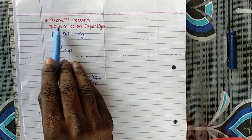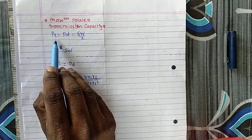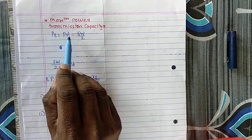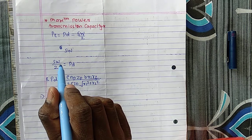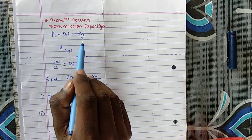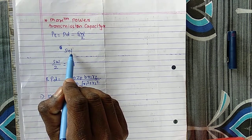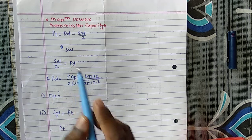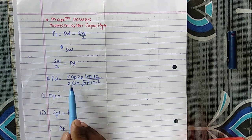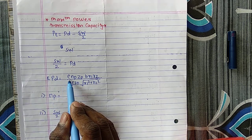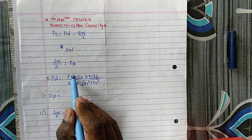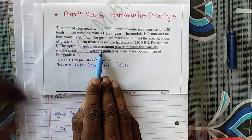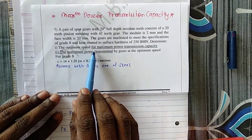For maximum power transmission, the basic equation is PT = PD = SW/2. The flow of the problem is: first calculate wear strength SW, then divide by 2 to get PD. Since both gears are made of steel, I'll use the steel equation for PD. All terms in that equation are known except NP, so I'll solve for NP — the optimum speed for maximum power transmission capacity.